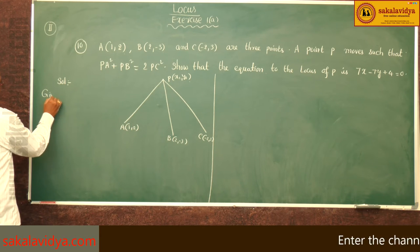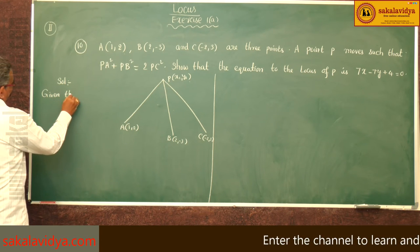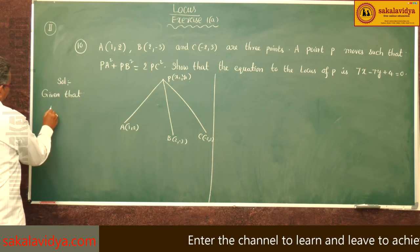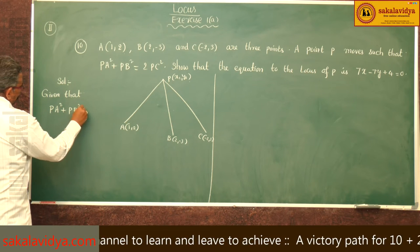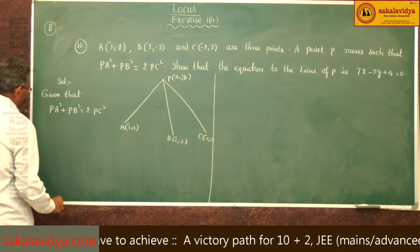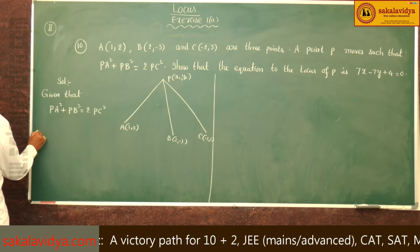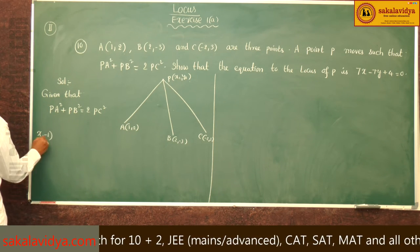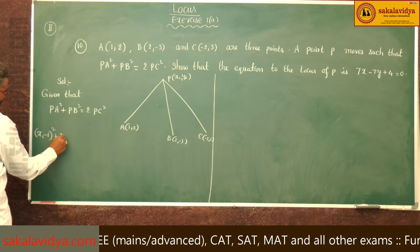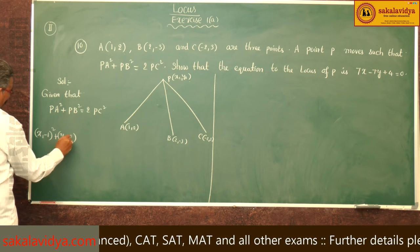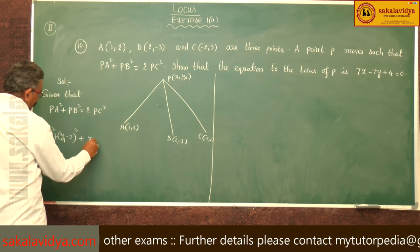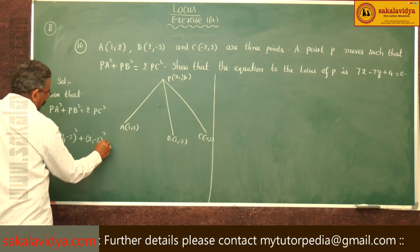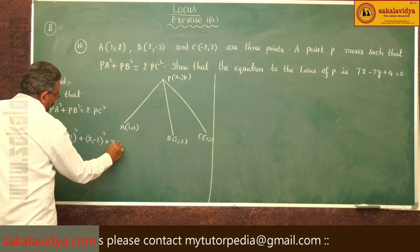Given that PA² + PB² equals 2PC². PA² is (x₁-1)² + (y₁-2)² plus PB² is (x₁-2)² + (y₁+3)².